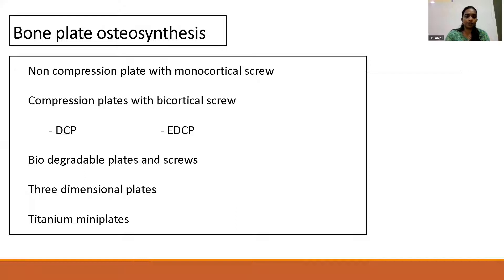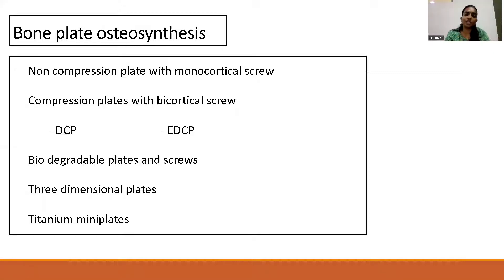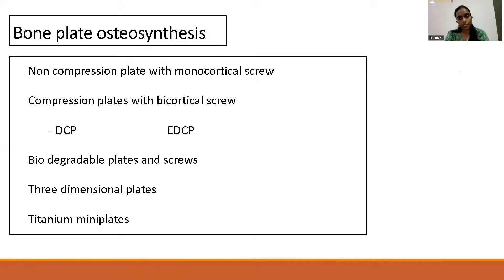Regarding bone plate osteosynthesis: non-compression plates or compression plates can be used for fracture fixation. Biodegradable screws and plates can be used in children or when a second surgery to remove the plate is not desirable. Three-dimensional plates and titanium mini plates can also be used. Titanium mini plates are most commonly used now because titanium can undergo osseointegration with bone and, unlike stainless steel plates, these need not be removed at a later stage.